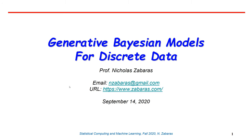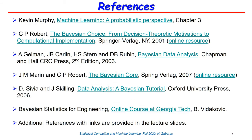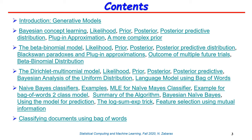Hello everybody. This is a continuation of our lecture on generative Bayesian models for discrete data. A few days ago we introduced Bayesian concept learning, a classification problem for discrete features, and we saw simpler models such as the beta-binomial model or the Dirichlet-multinomial model. We discussed the calculation of the likelihood, the prior, the posterior, and the computation involved for computing the posterior predictive distribution.